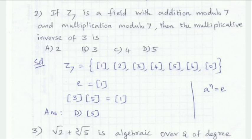Question number 2: If Z7 is a field with addition modulo 7 and multiplication modulo 7, then the multiplicative inverse of 3 is. Z7 is a field of 7 elements including 0, so there are 6 non-zero elements. The multiplicative inverse of an element times that element equals 1.